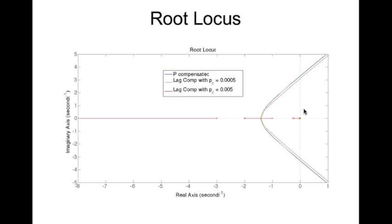Now what I did was I plotted two compensators. In fact, this is the original P compensated system. The green thing that you see is with pc at 0.0005, that's a green pole location here. And then the red is a lag compensation with pc at 0.005, that is somewhere here at the red. So as you can see, the red is slightly different from the original root locus, and the lag compensated with pc at 0.0005.